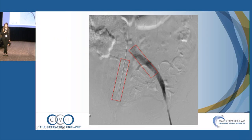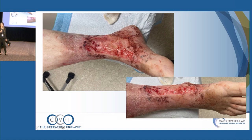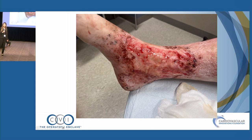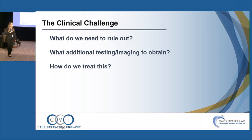The venous stents were placed bilaterally — the left more proximal with concern for a May-Thurner picture, and the right a bit more distal, both in the common iliac. She had a very large ulcerated lesion on her right foot that was very painful. The clinical challenge: she had already been seen by another provider with some venous workup done. What else do we need to rule out and what testing should we obtain to guide further treatment?